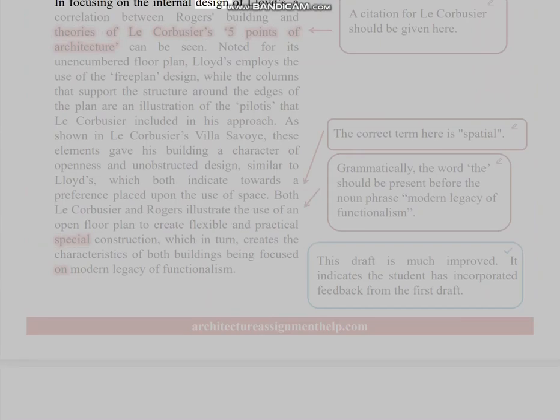In focusing on the internal design of Lloyd's, a correlation between Rogers' building and theories of Le Corbusier's five points of architecture can be seen. Noted for its unencumbered floor plan, Lloyd's employs the use of the freeplan design, while the columns that support the structure around the edges of the plan are an illustration of the pilotis that Le Corbusier included in his approach. As shown in Le Corbusier's Villa Savoye, these elements gave his building a character of—a citation for Le Corbusier should be given here. The correct term here is 'spatial.' Elements gave his building a character of openness and unobstructed design, similar to Lloyd's, which both indicate towards a preference placed upon the use of space.